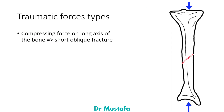A compressing force applied along the long axis of the bone produces a short oblique type of fracture. If we compress the tibial bone from both sides along its long axis, we get a short oblique fracture.